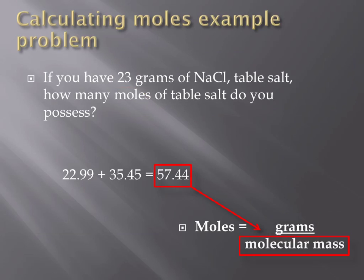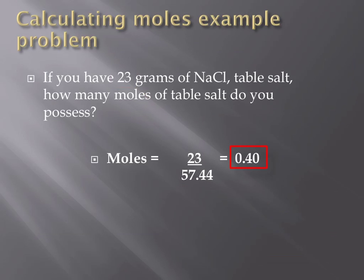The molecular mass of NaCl is the denominator for this equation. The last factor that you need to calculate is the number of moles that you possess. By taking your number of grams divided by the molecular mass, or 23 divided by 57.44, you would find the number of moles of the substance you possess to be 0.40.